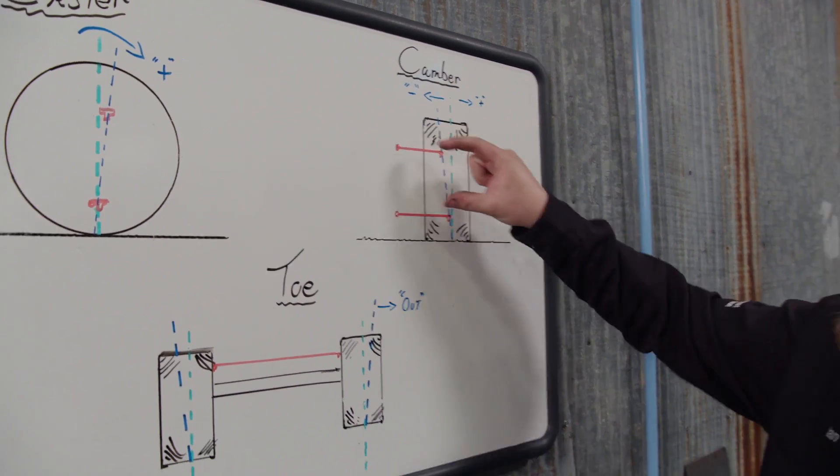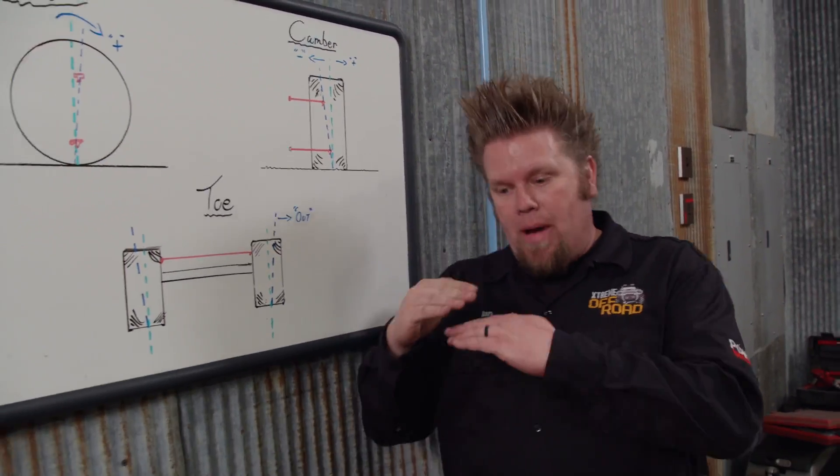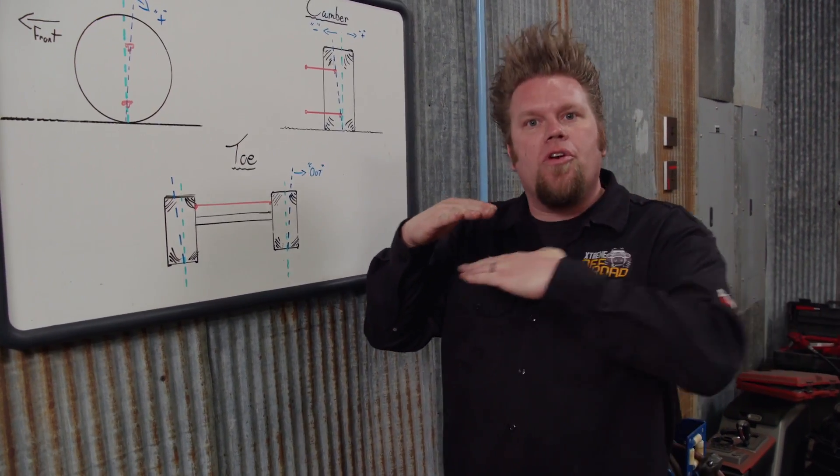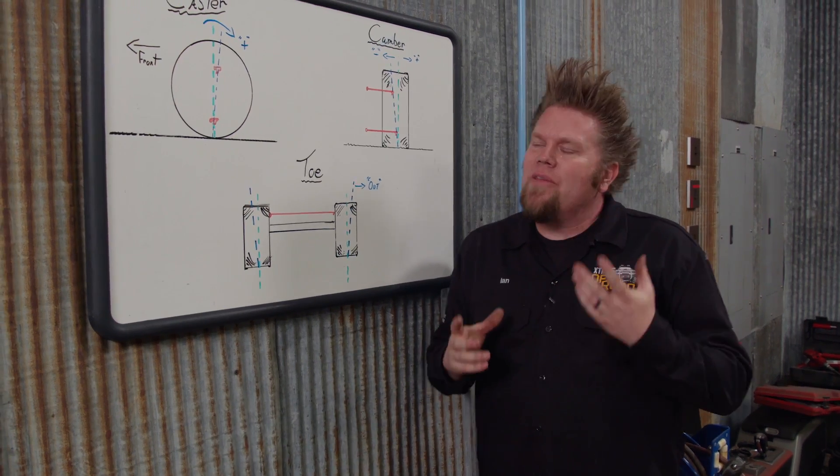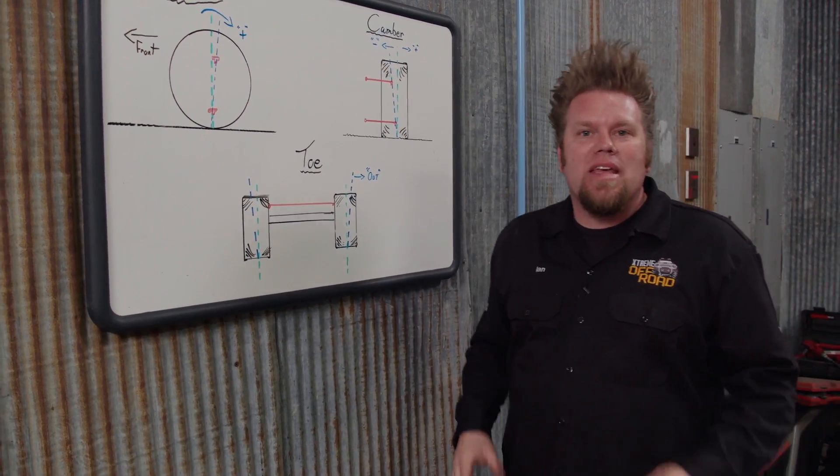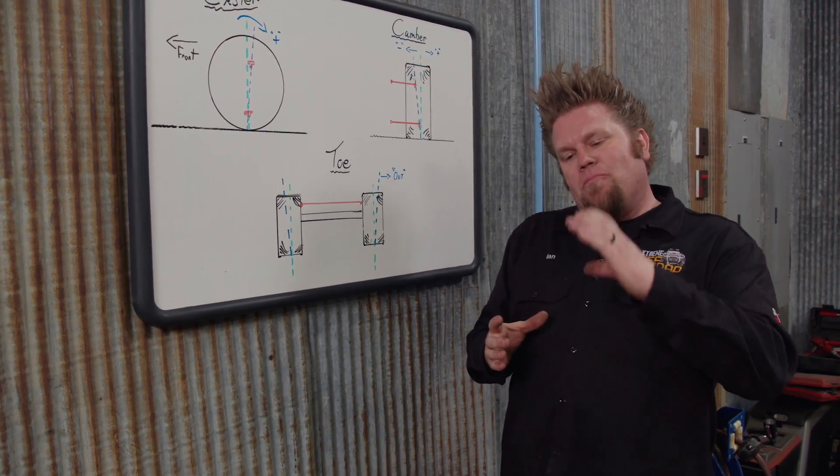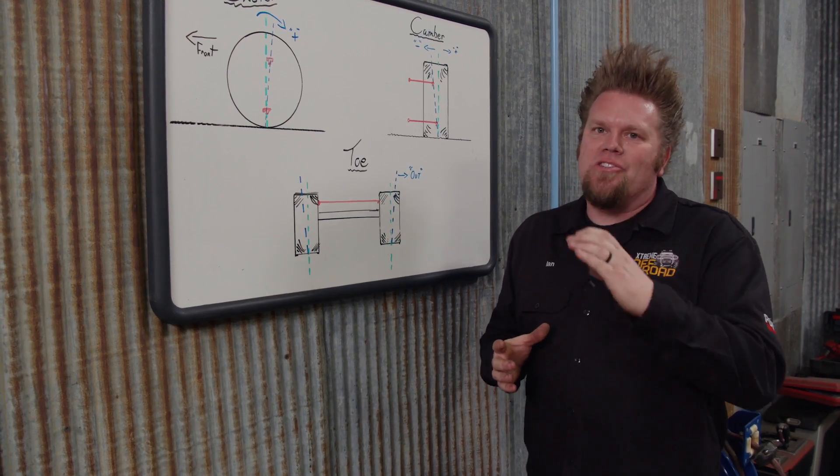On an A-arm vehicle, we can easily adjust that by moving the lower arm either further in or further out and causing the tire to tilt. On a solid axle rig, there's not a lot of adjustment in the camber because the ball joints are mounted onto that inner seat.